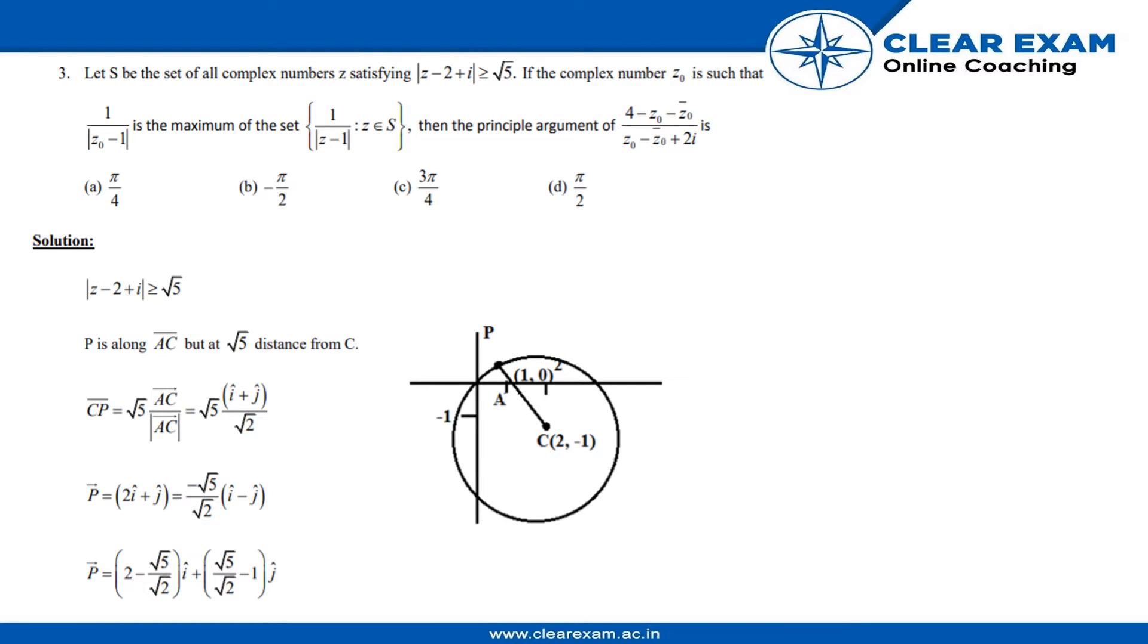In this question, let S be the set of all complex numbers satisfying |z - 2 + i| ≥ √5. If the complex number z₀ is such that 1/|z₀ - 1| is the maximum of the set {1/|z - 1| : z ∈ S}, then find the principal argument of (4 - z₀ - z̄₀)/(z₀ - z̄₀ + 2i). So we have to find the principal argument. It is a simple question.